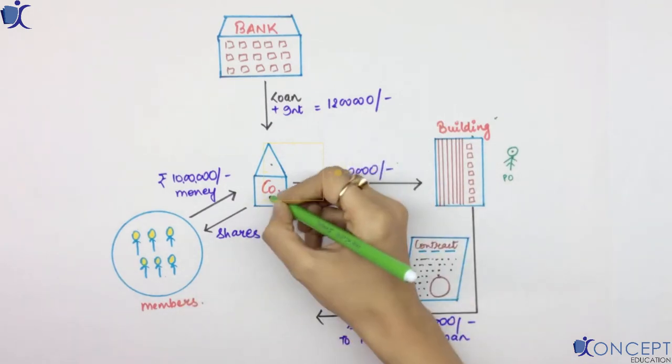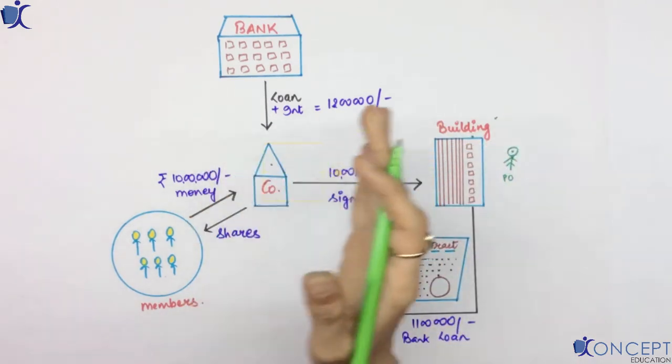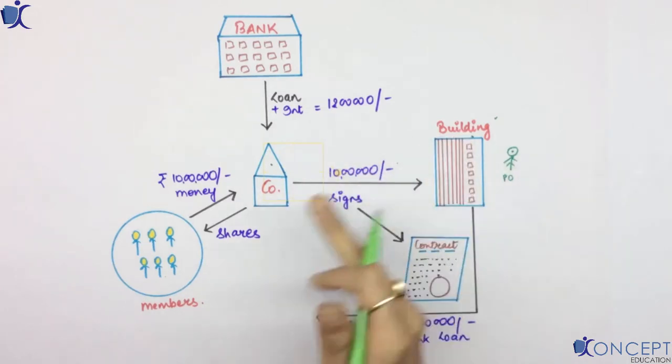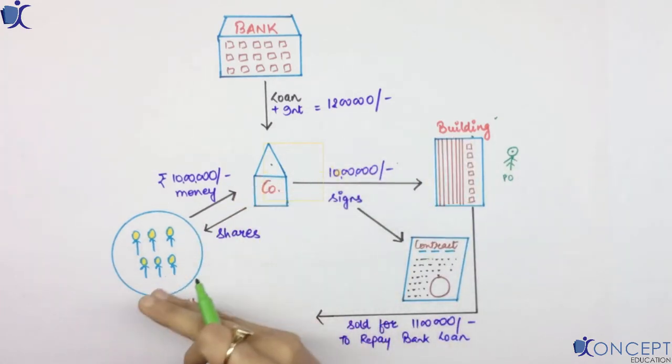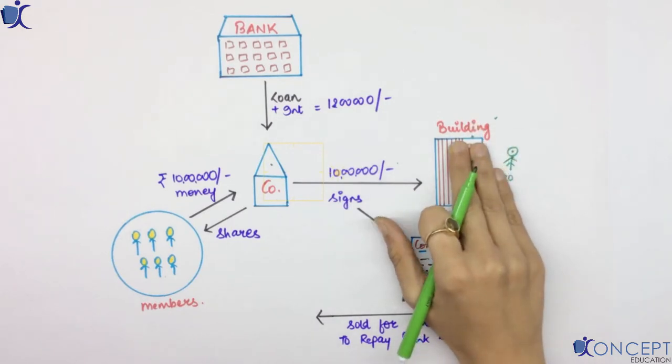Rightfully members own the company but the company owns the building. So if I say that if the company owns the building and members own the company, then members will also own the building. Would that thing ever happen? The answer is a big no.